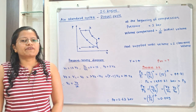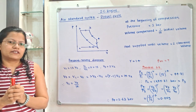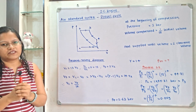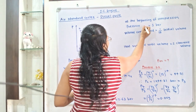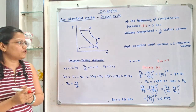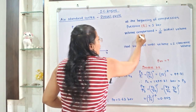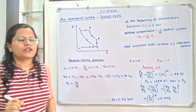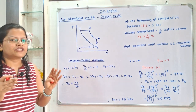Let us understand the given data with the help of a pressure-volume diagram of the Diesel cycle. Process 1 to 2 is the compression process. At the beginning of compression, that means at point 1, pressure P1 is equal to 1 bar. Volume compressed means volume at point 2 is equal to 1/15 of initial volume, so V2 = (1/15)V1. Therefore V1/V2 = R = 15, where R is the compression ratio.